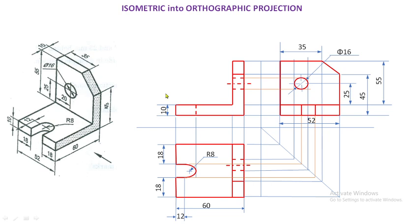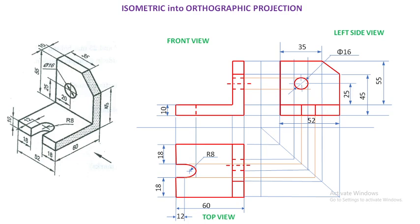So this is our final answer of orthographic projection for this particular 3D object — front view, top view, and this is the left side view, which has to be drawn to the right of the front view. I hope you understood this particular isometric projection. In the next video we will solve one more isometric into orthographic projection problem. If you like this video, you can click the like button and also share the same with your friends, and subscribe this channel for further videos. Thank you.